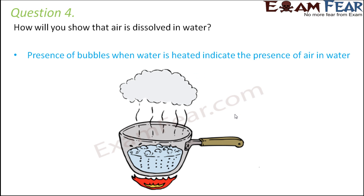Question number four: how will you show that air is dissolved in water? Take water in a pan and start heating it. Just before the water starts to boil, you would see the presence of bubbles on the surface of the container, and these bubbles indicate the presence of air in water.